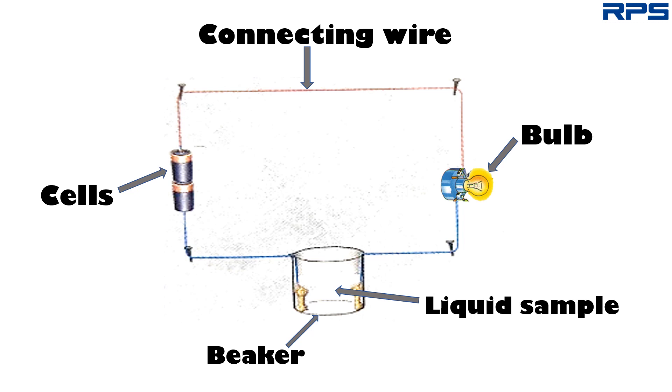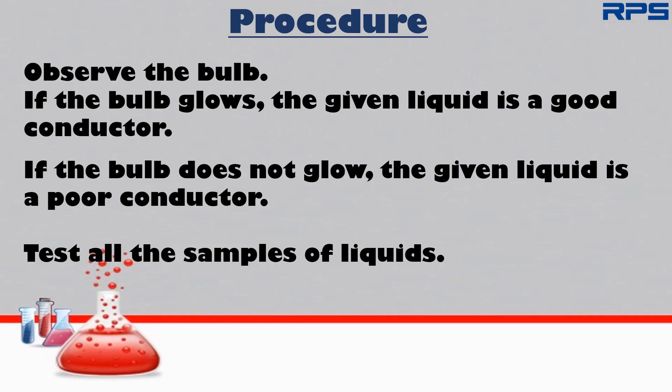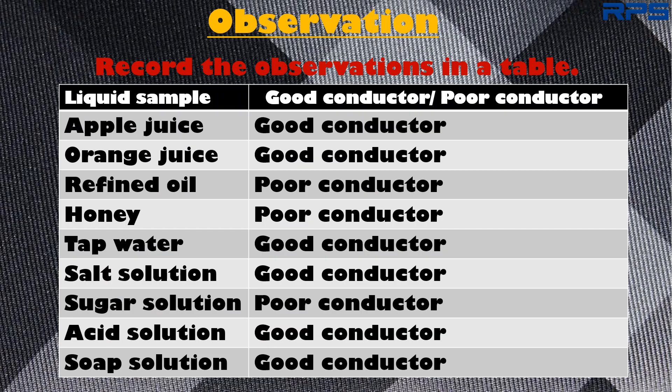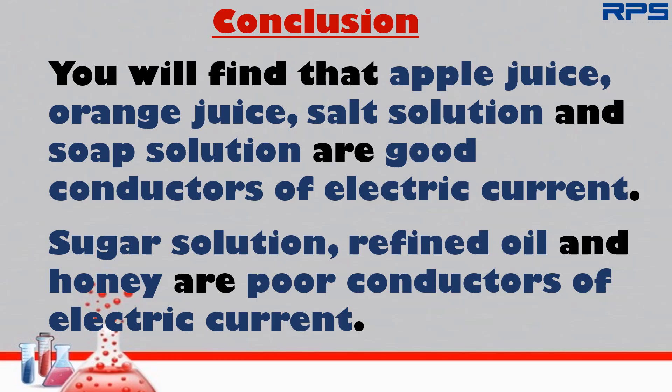Observe the bulb. If the bulb glows, the given liquid is a good conductor. If the bulb does not glow, the given liquid is a poor conductor. Test all the samples of liquids and record your observations in a table. You will find that apple juice, orange juice, salt solution, and soap solution are good conductors of electric current, whereas sugar solution, refined oil, and honey are poor conductors of electric current.